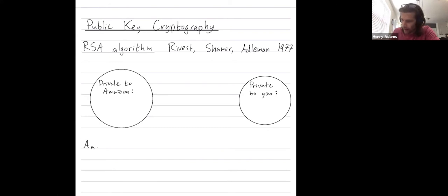So Amazon picks two large, say 100 digit primes, call them P and Q. So 100 digit, not like a prime bigger than 100, 100 digits. So these are really, really large numbers.